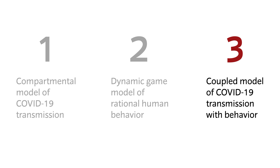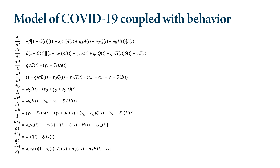Now let's couple the epidemiological model with the two dynamic games of human behavior. The coupled model now consists of nine equations: we have an extra equation describing the change in support of the closure behavior, a second extra equation describing the change in the socioeconomic losses function, and a third extra equation describing the change in the self-isolation behavior. Also, the proportion of individuals who support closures and who self-isolate affect the force of infection term.